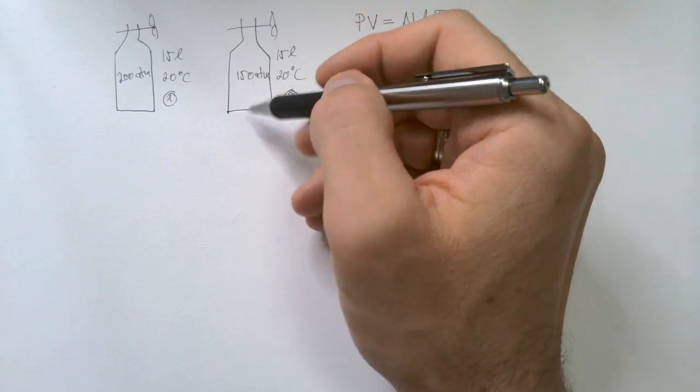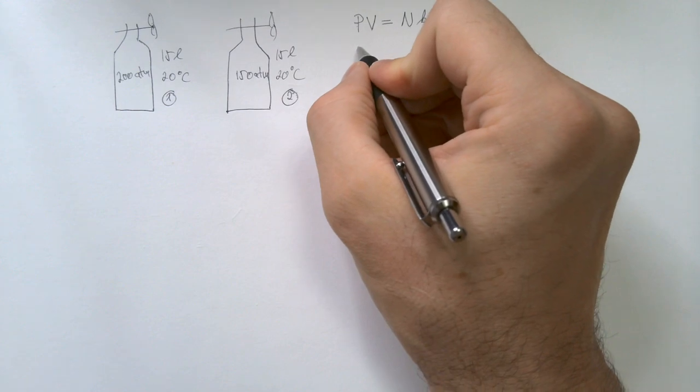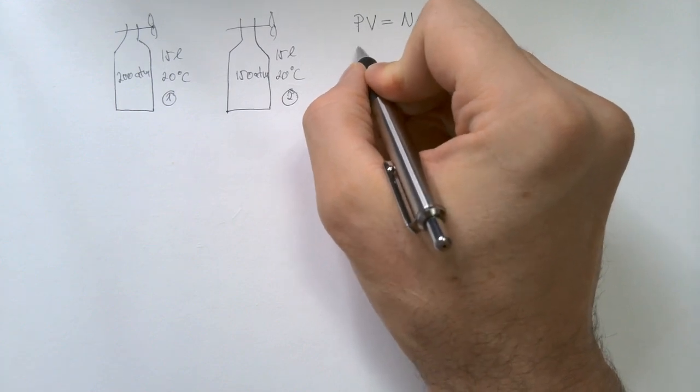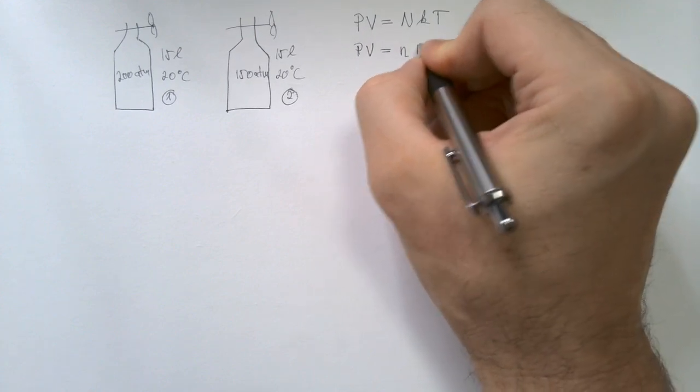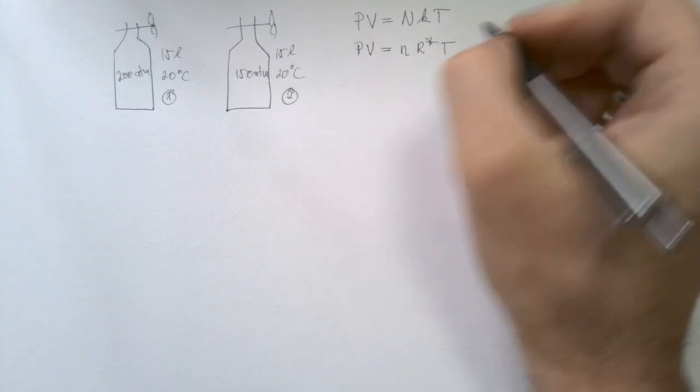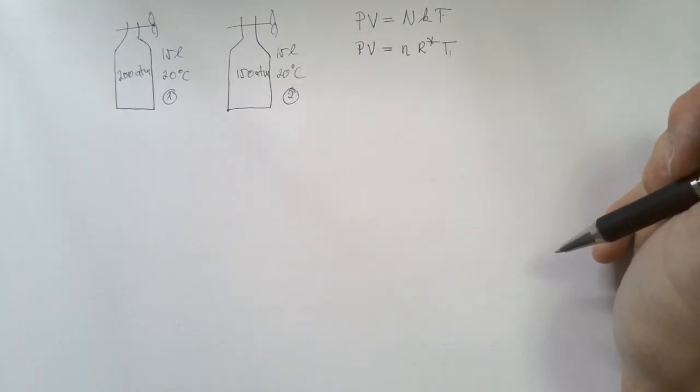But for this problem, where we need to find the mass deficit, we will use equation of state in the form PV is equal small n R star T. How do you get from here to here? Well, I have entire video explaining that.